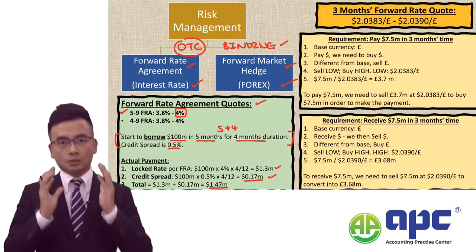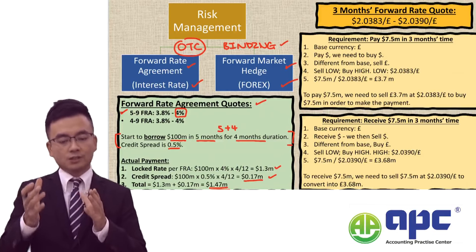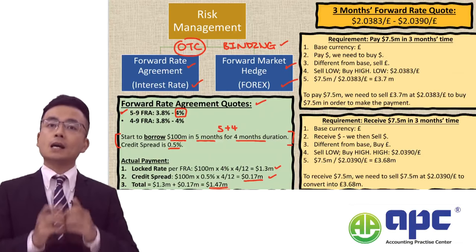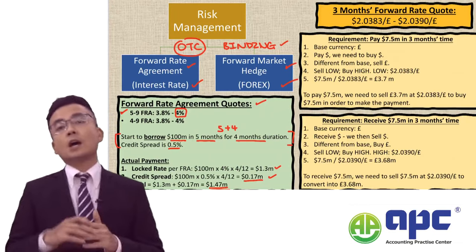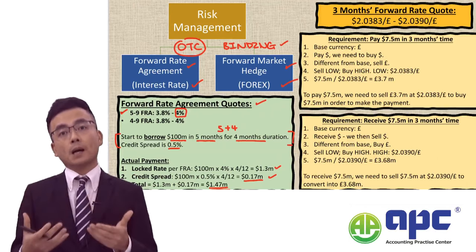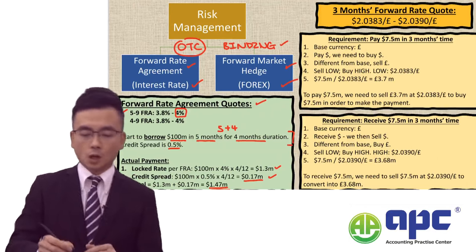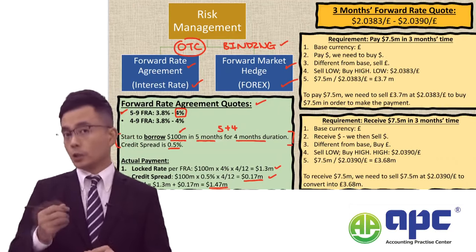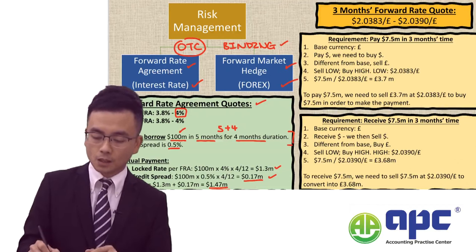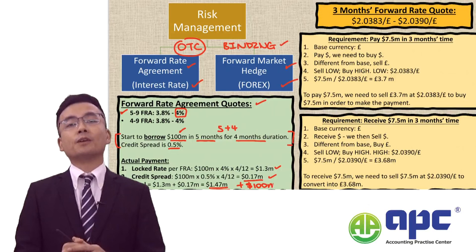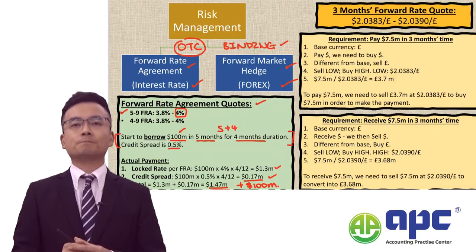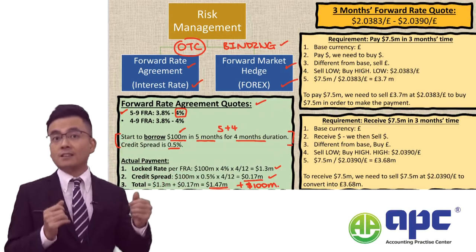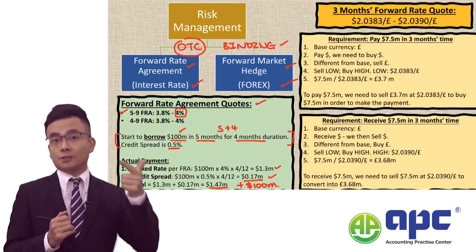Make sure you divide your interest calculation into two steps: firstly the locked rate per the FRA, and then the credit spread. Of course, for the total payment you also need to pay the principal of $100 million. So the total payment, including interest and the redemption value, would be $100 million plus $1.47 million. This solely reflects the entity borrowing or depositing money in the future.